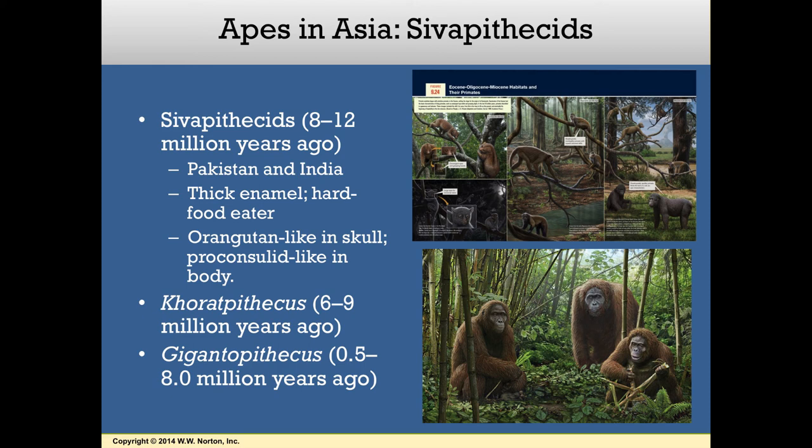By the Pleistocene, one of the most unusual and amazing primates ever discovered had evolved in Asia. It is called Gigantopithecus, and though rare and known only through teeth and jaws, it was enormous — estimated to have weighed upward of 500 pounds and surviving on a diet of bamboo. It lived until quite recently and probably overlapped in time with some of our own ancestors, Homo erectus, in Asia.